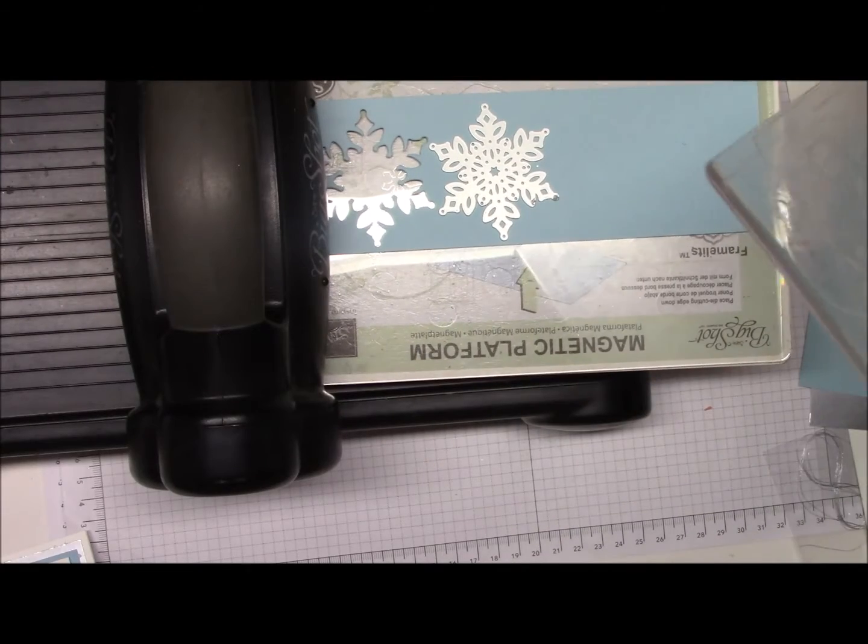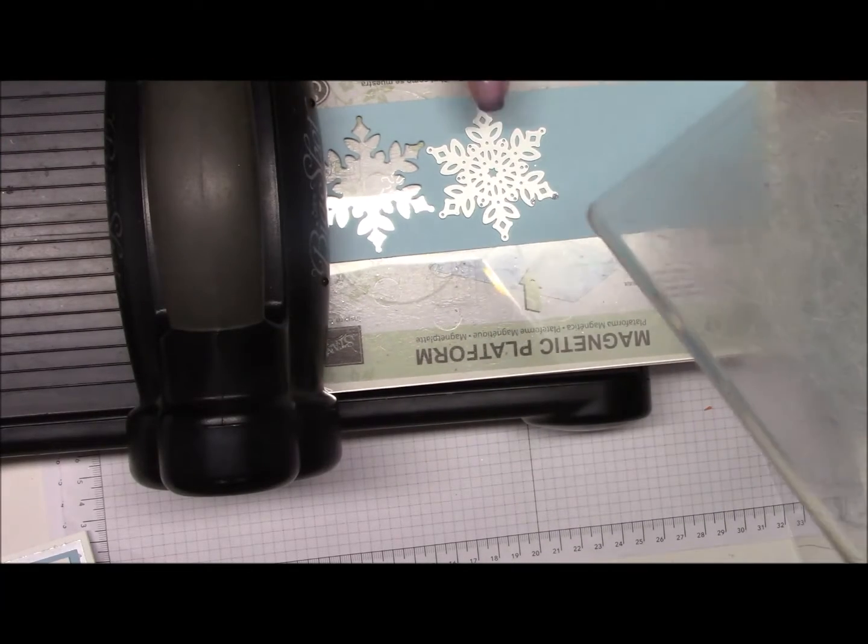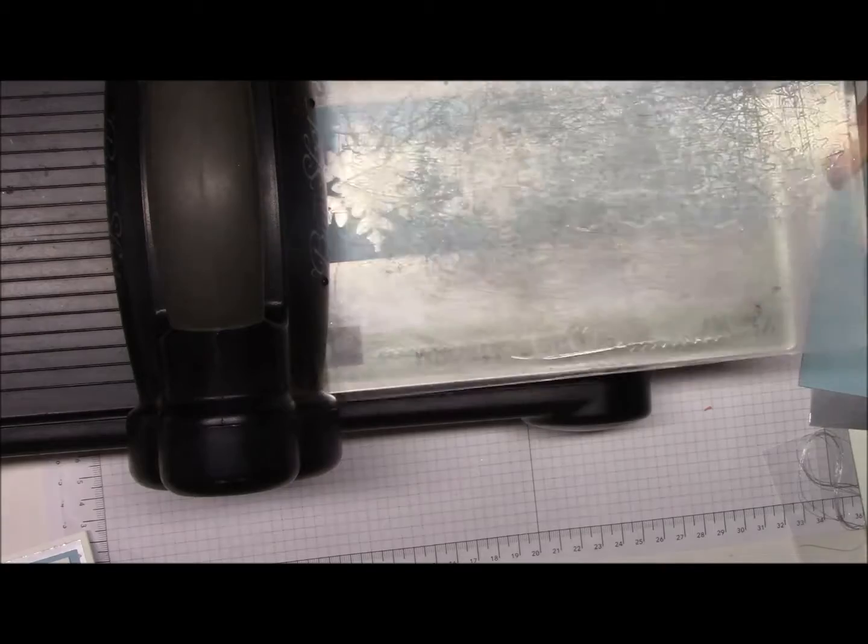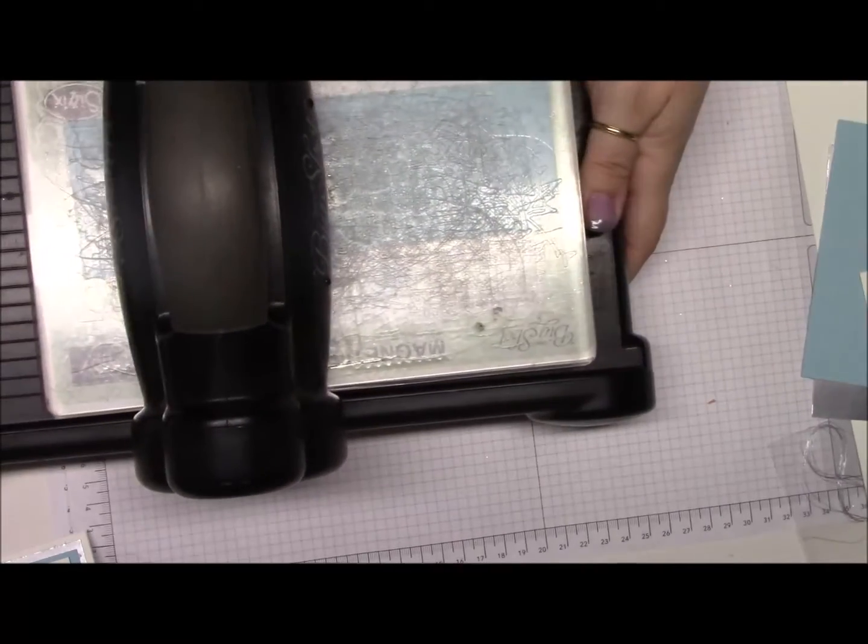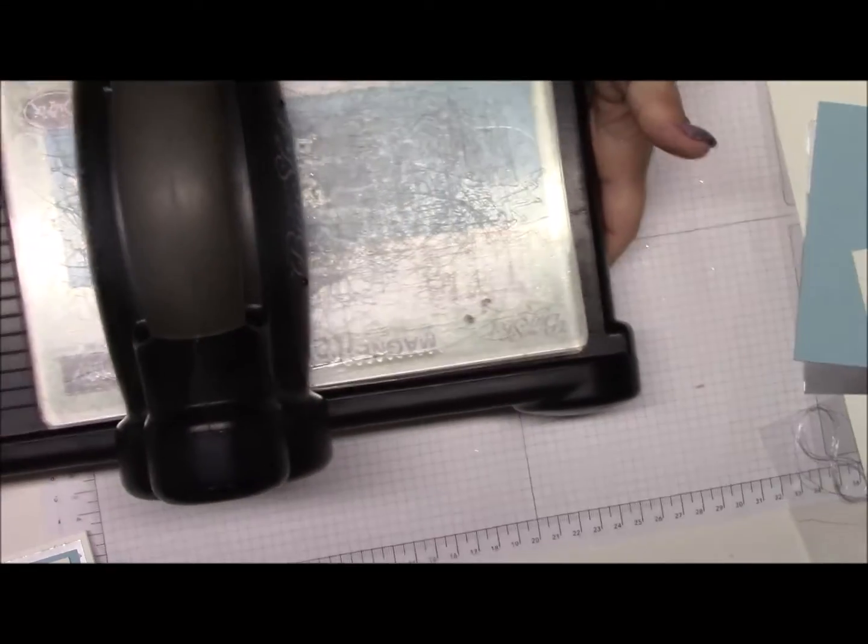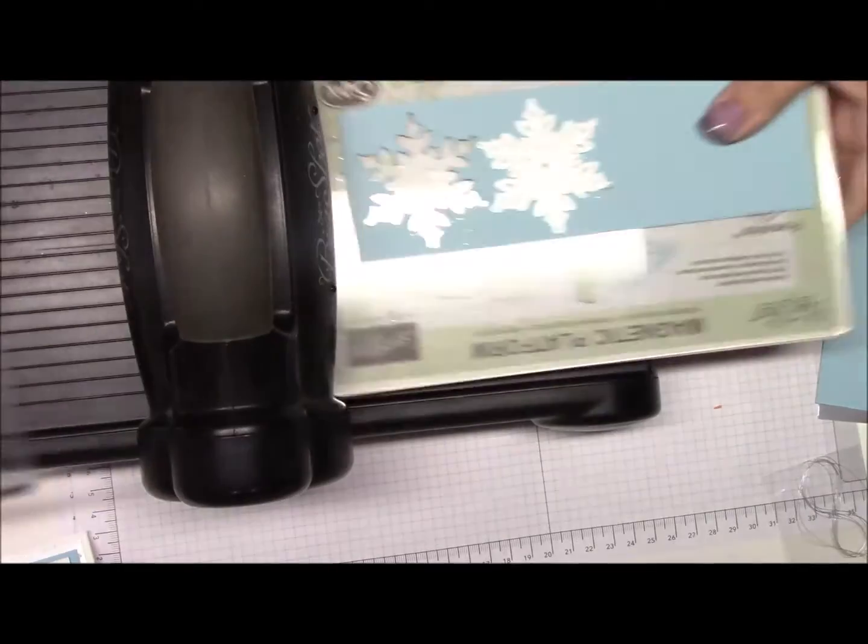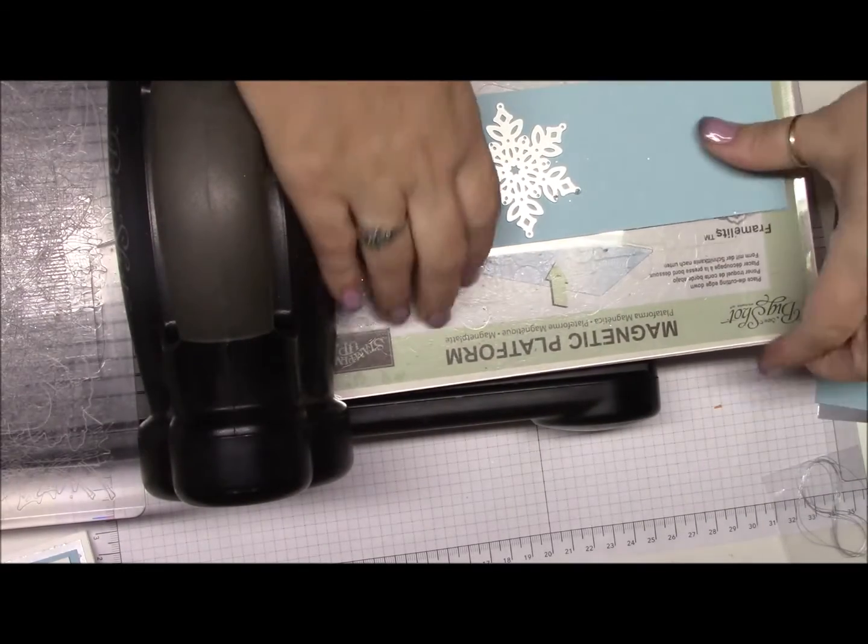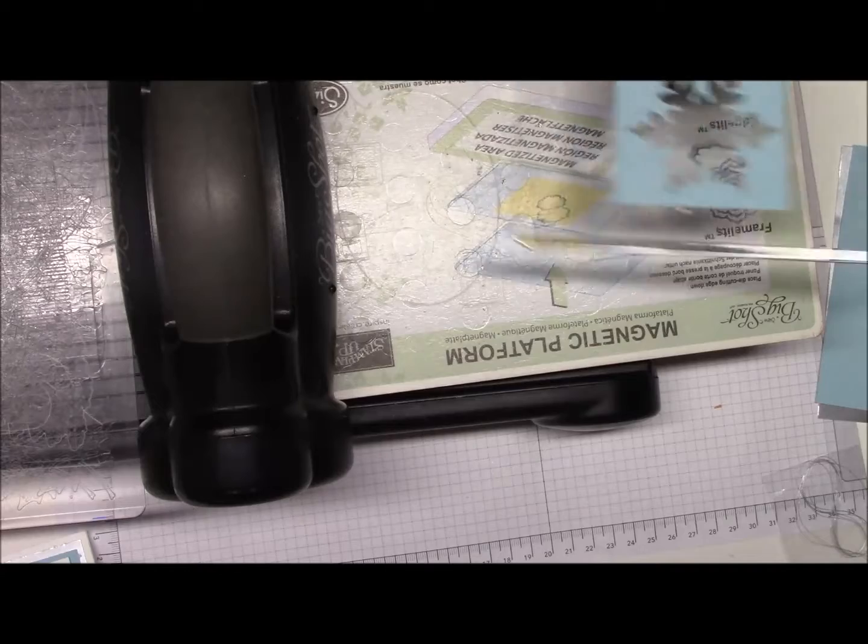So I have the magnetic platform, I have the one cutting plate, the paper, the die, and then the other cutting plate. And I'm just going to cut this through. There we go. Take this up. This magnetic plate really holds it on there.